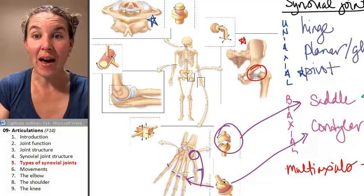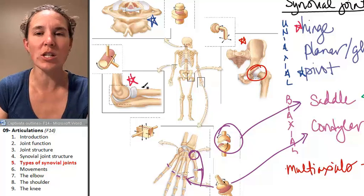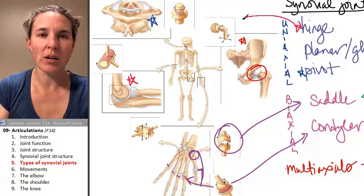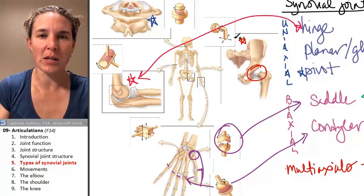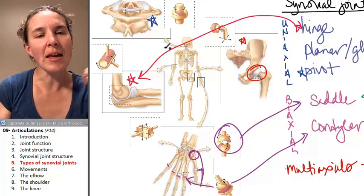And then we have our good friend, the hinge, which is my elbow. Don't get your little red things confused, because I made the multiaxials red as well.